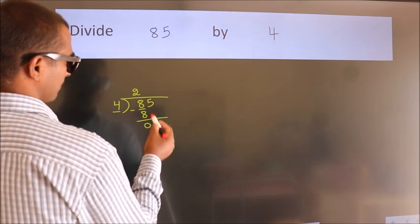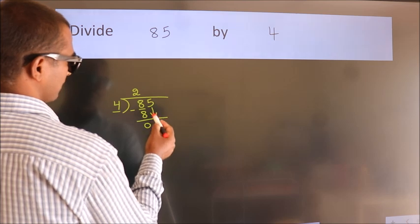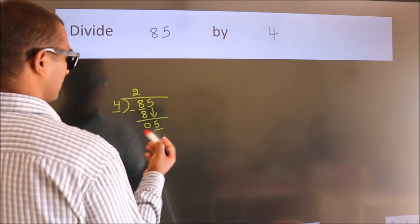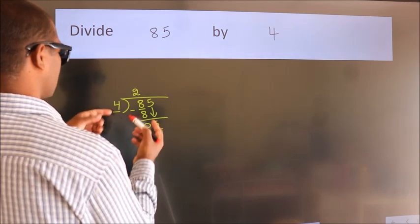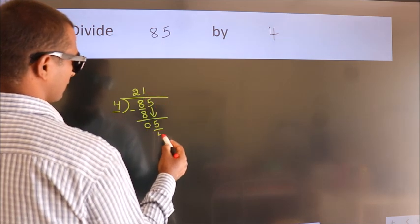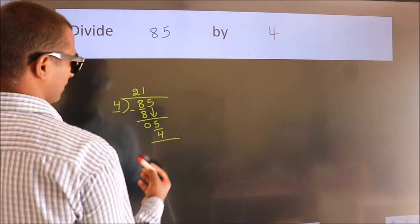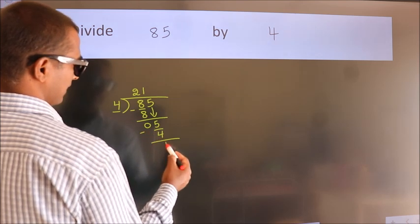After this, bring down the next number, so 5 down. A number close to 5 in the 4 table is 4 times 1, which is 4. Now we subtract and get 1.